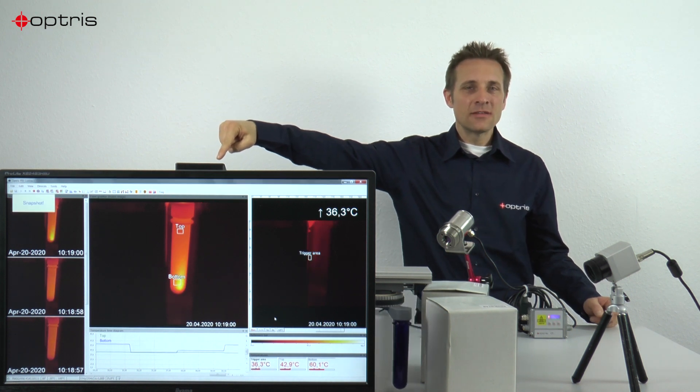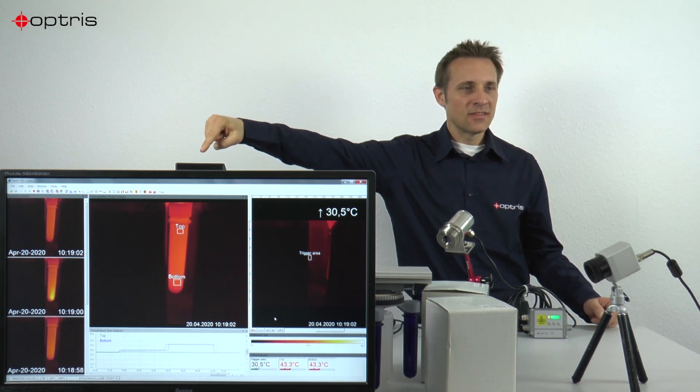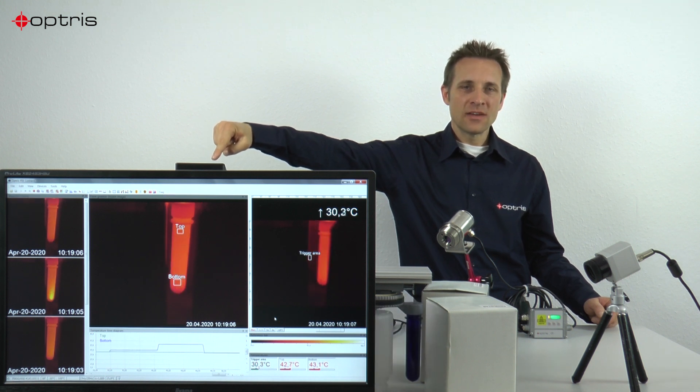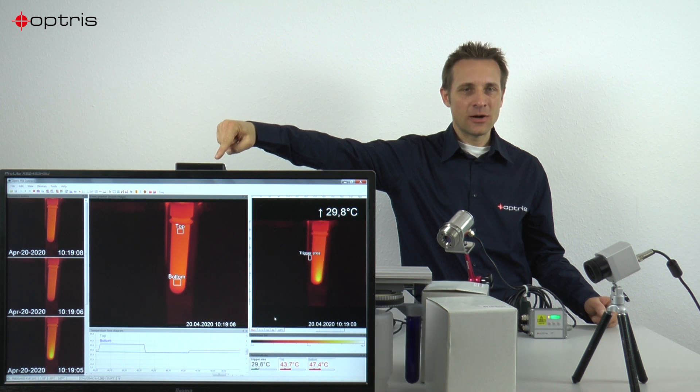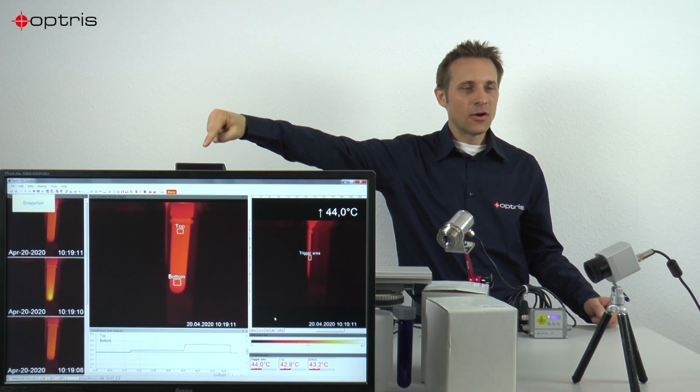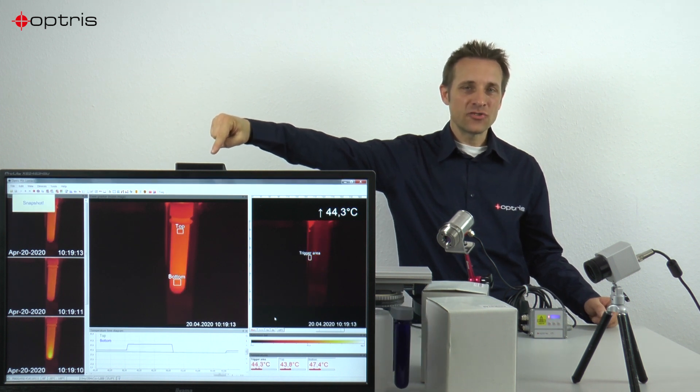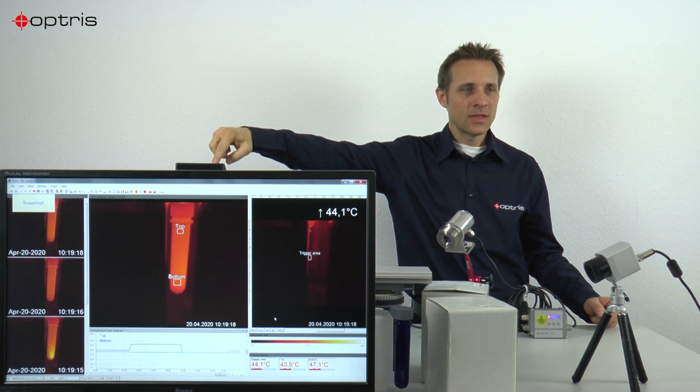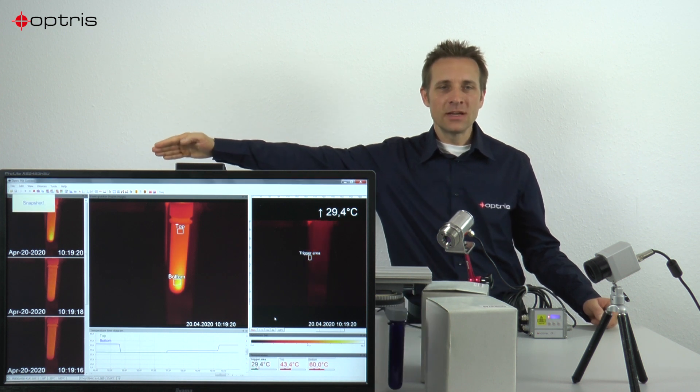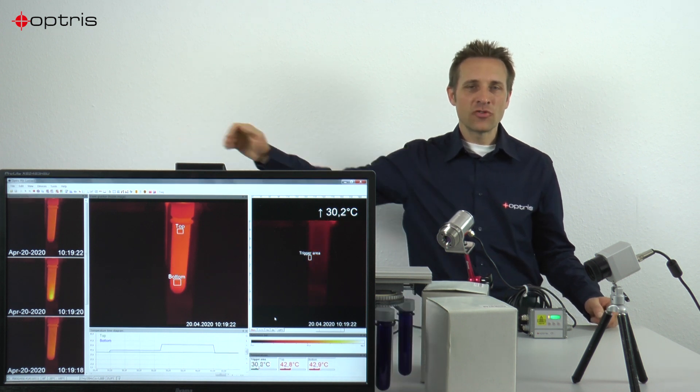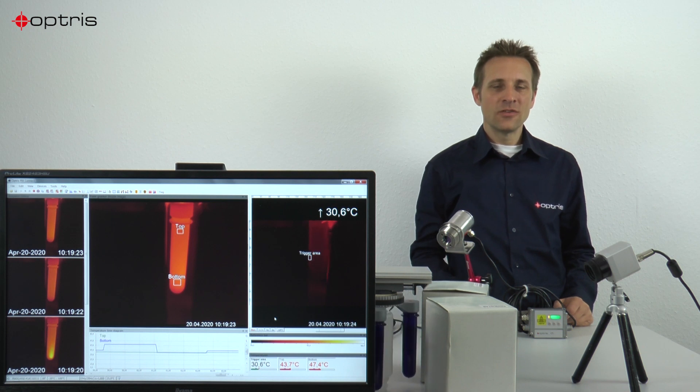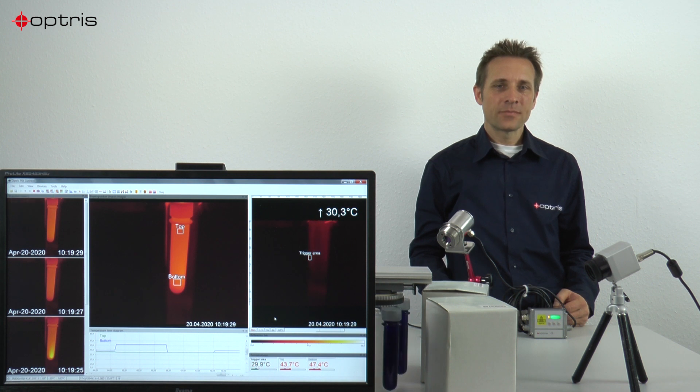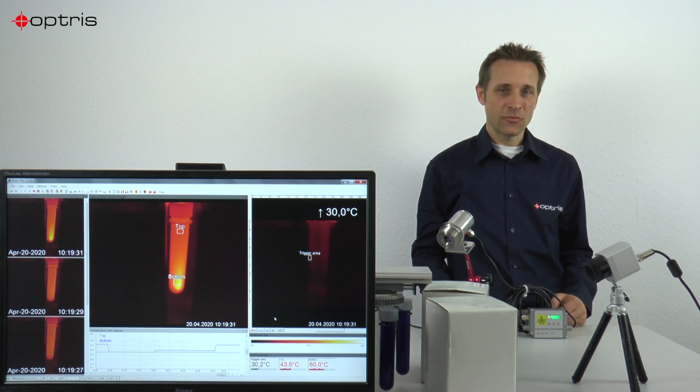You can see that I created also in my snapshot two measure areas, the top and the bottom area, which shows me the temperature of these parts of measure areas. You can also see that I created a temperature time diagram, which you can see at the bottom of the screen. And on the right side of the screen, you can see a snapshot history. So each image, which is recorded by our event grabber function, will be saved in our snapshot history.